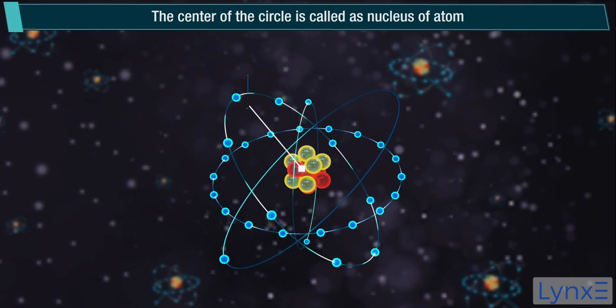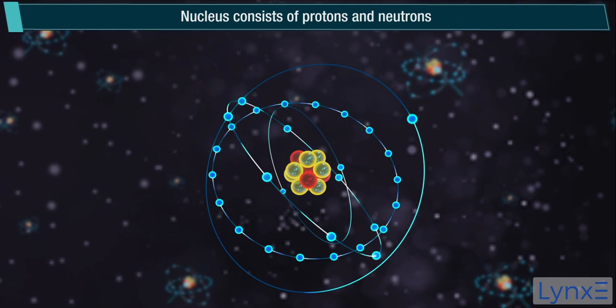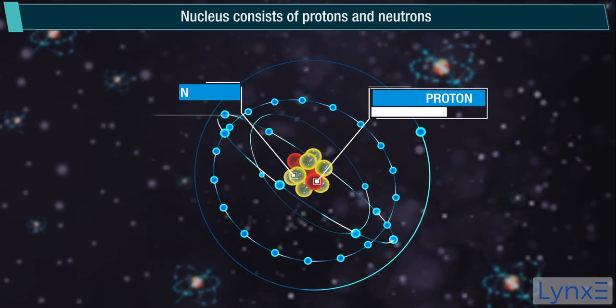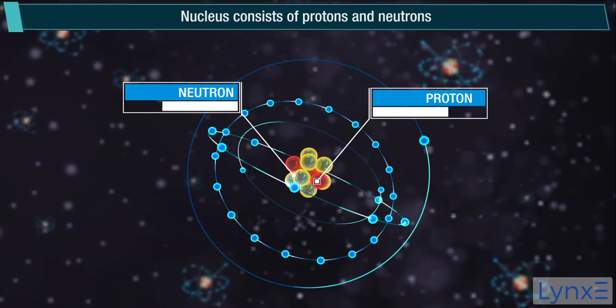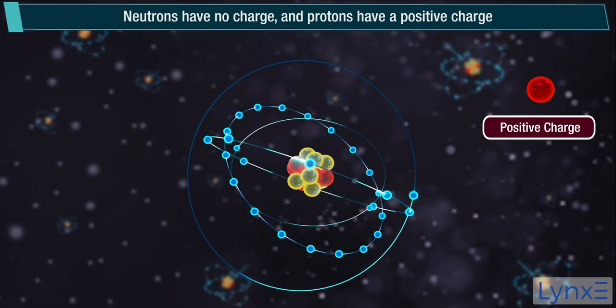The center of the circle is called as nucleus of atom. Nucleus consists of protons and neutrons. Neutrons have no charge, and protons have a positive charge.